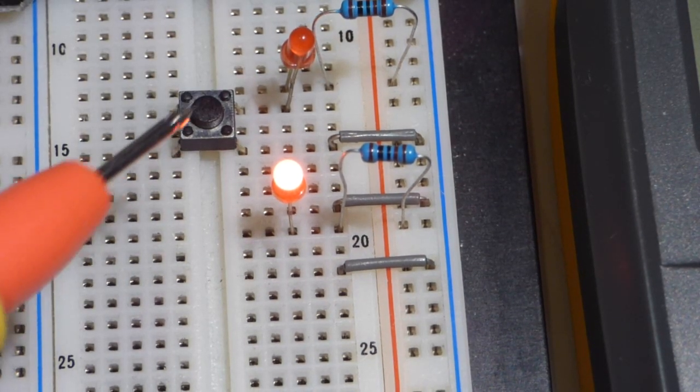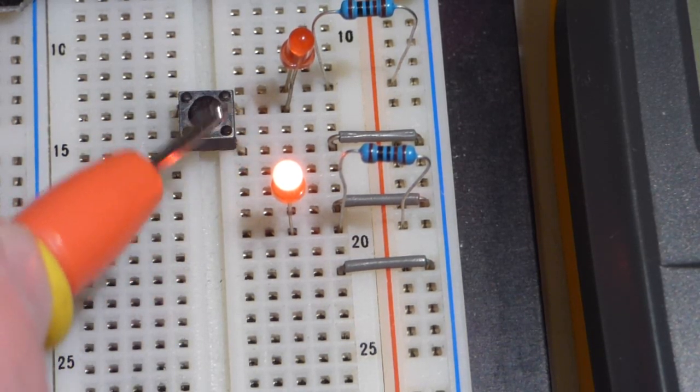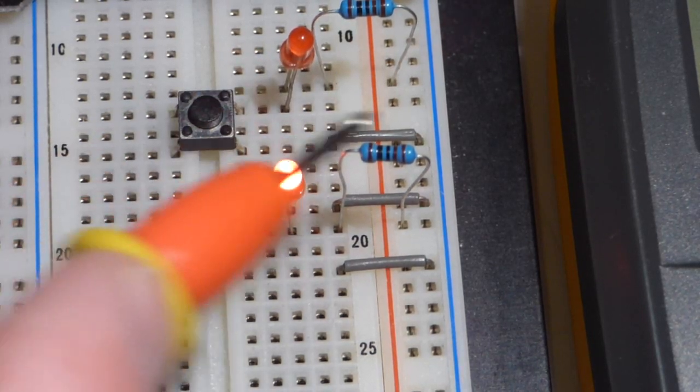So this is a normally open switch. So right now, it's open. These two pins are not connected right now, so current cannot flow.